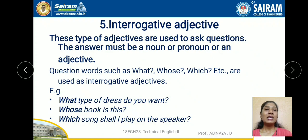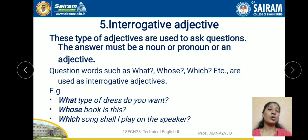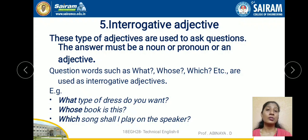The fifth type is interrogative adjective. These are used to ask questions, and the answer must be a noun, pronoun, or adjective. Question words such as what, whose, which are used as interrogative adjectives. For example: what type of dress do you want? Whose book is this? Which song shall I play on the speaker? The answers to these questions may be another adjective, noun, or pronoun.